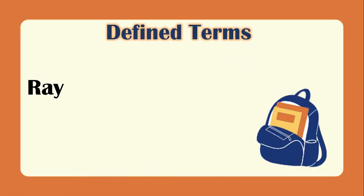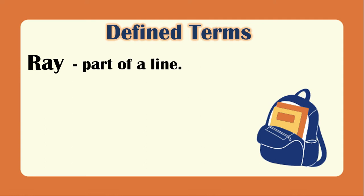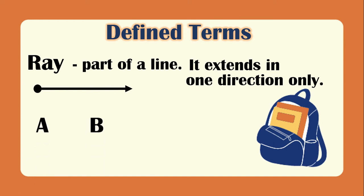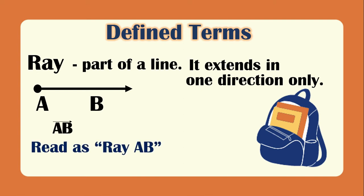The second defined term is the ray. A ray is a part of a line that extends in one direction only — from one endpoint, you can extend the ray using a one-headed arrow. We name this ray as ray AB.